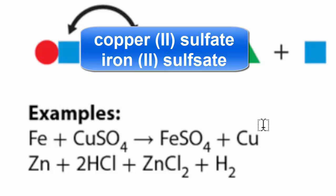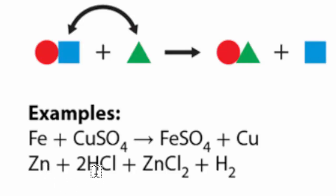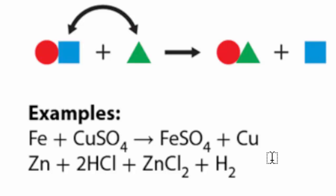Another example: zinc plus hydrochloric acid. The zinc, which is neutral by itself but positive in a compound, displaces the positive hydrogen. The hydrogen goes by itself as H₂ because it's diatomic, and the zinc is now with the chlorine. Zinc is plus 2, chlorine is minus 1, so the formula is ZnCl₂ for zinc chloride. That is an example of a single replacement reaction.